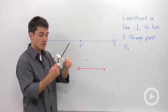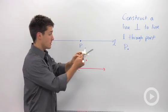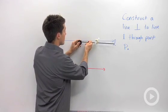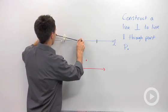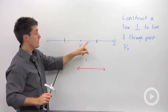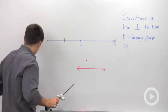You're going to take your compass, it doesn't matter what the distance is that you have it set apart, and I'm going to make a point over here and a point on the other side of point P. So now I've created two points that are the same distance from point P.